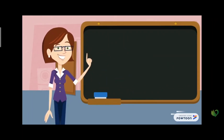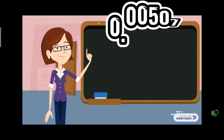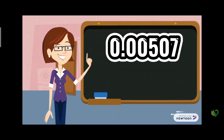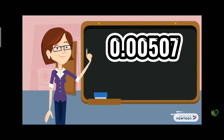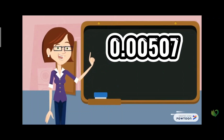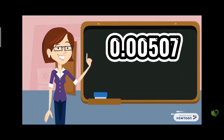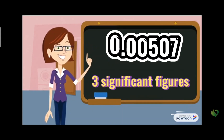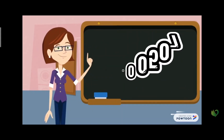For the next one, we do have a decimal point but there are no trailing zeros. We do have some zeros, but those leading zeros will not be counted. Only these three digits will be counted, so there are three significant figures in that number.